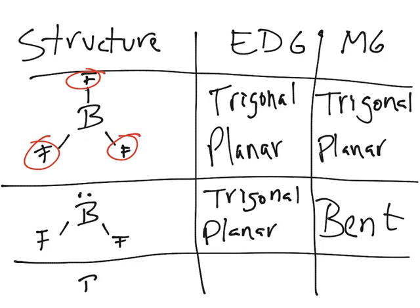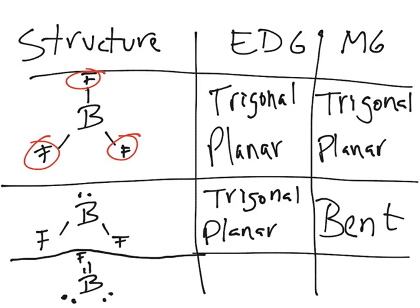Finally, when the sp2-hybridized atom has only one bond and two lone electron pairs, the EDG is still trigonal planar, but the molecular geometry will be linear.